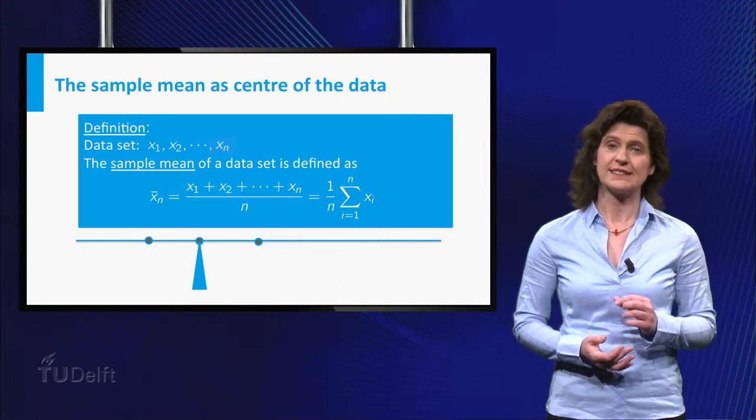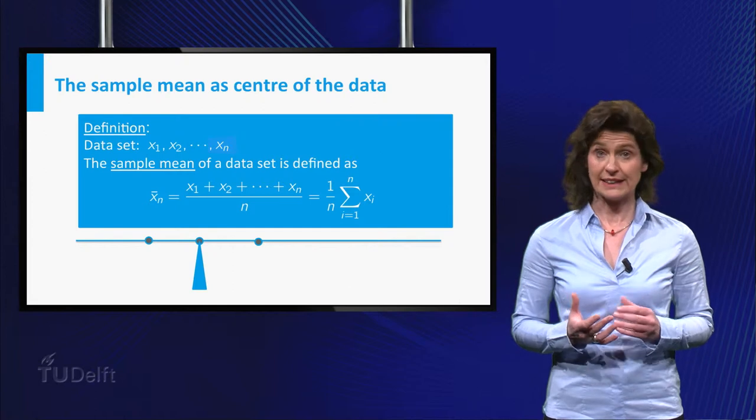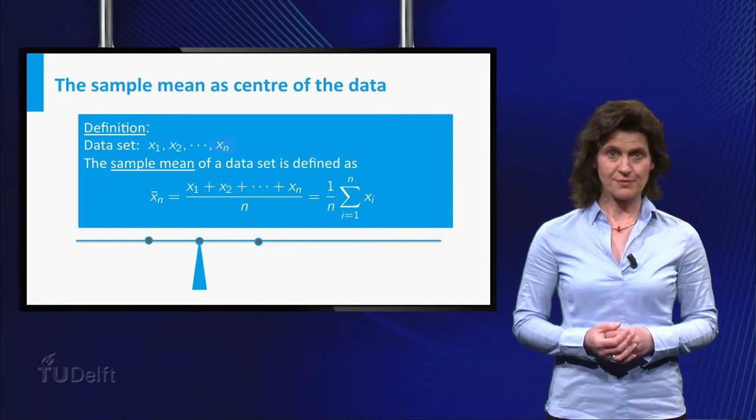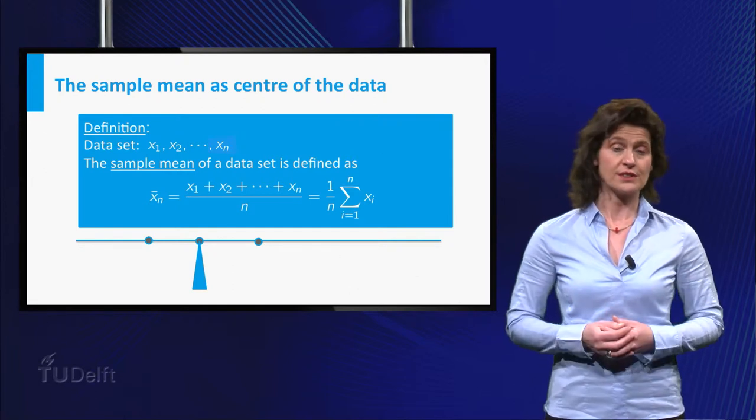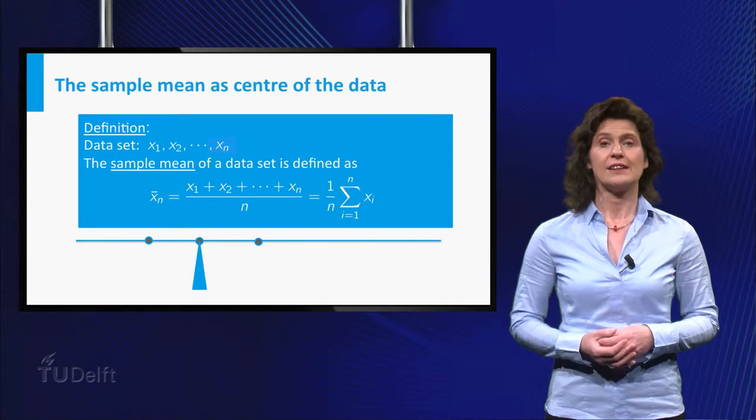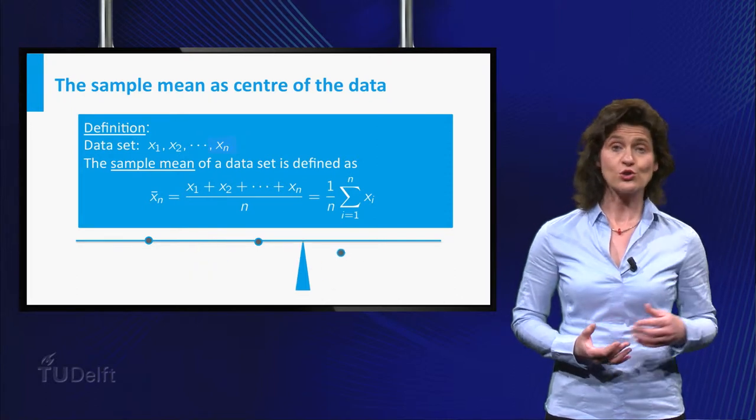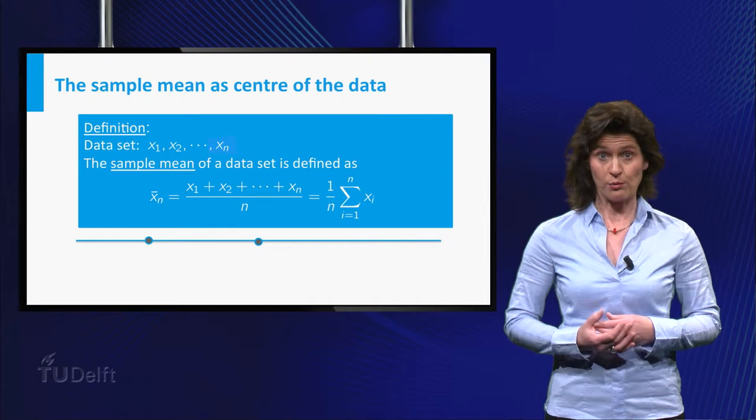The mean is notorious for its sensitivity to only a few bad data points. For instance, if one point is wrongly recorded, say much too high, then the mean value of the data will also move to the right with that one point.